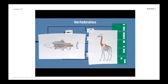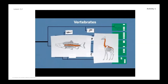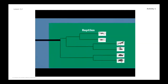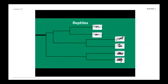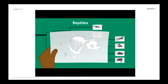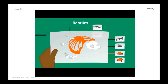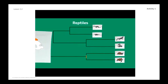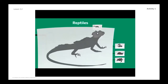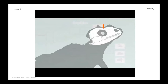No matter where any two species are on the evolutionary tree, they will always share common structures. For example, salmon and giraffes are very different but they both have backbones because they inherited this structure from a shared ancestor. Over time, populations separate and branch off into new groups of species. Species that branch off from a more recent common ancestor can share structures that no other species have — these are called diagnostic structures.